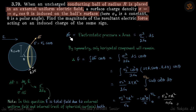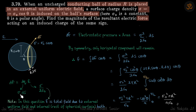The small force df on this ring element equals electrostatic pressure times area: df = (sigma² / 2ε) · dS. To clarify: the force on the element is dq times E, where dq = sigma · dS and E = sigma / 2ε, which we have proven before.